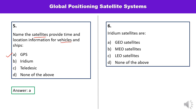Question number six: Iridium satellites are — GEO satellite, MEO satellite, LEO satellite, or none of the above? Iridium satellites are low earth orbit satellites, so the correct answer is C.